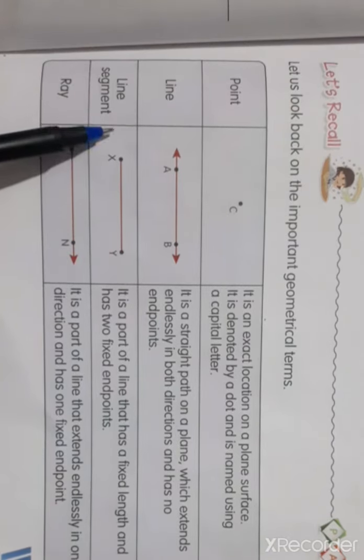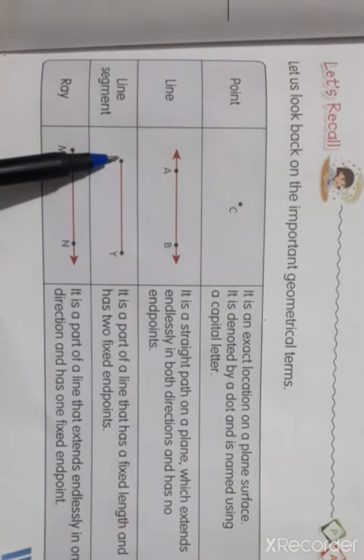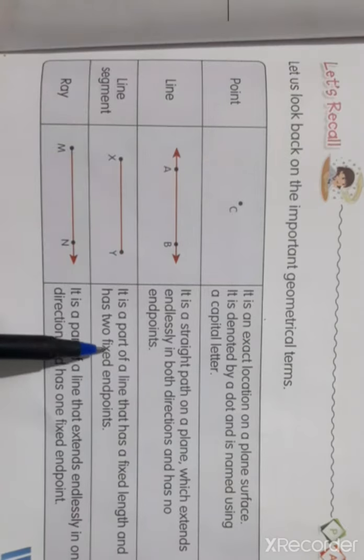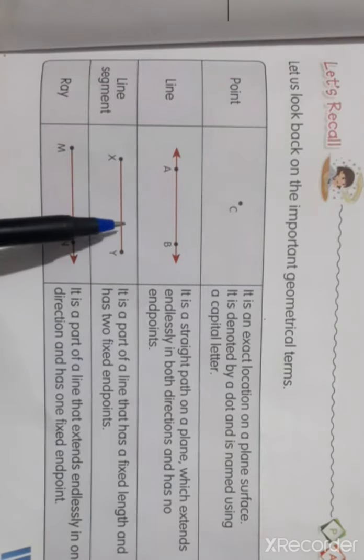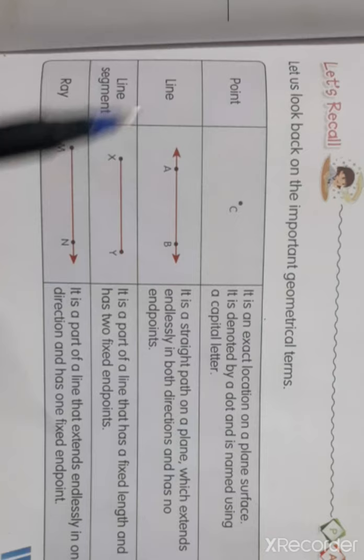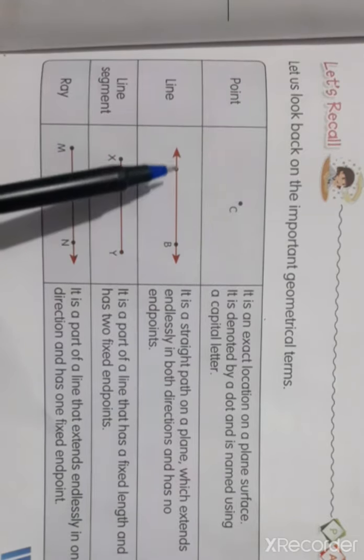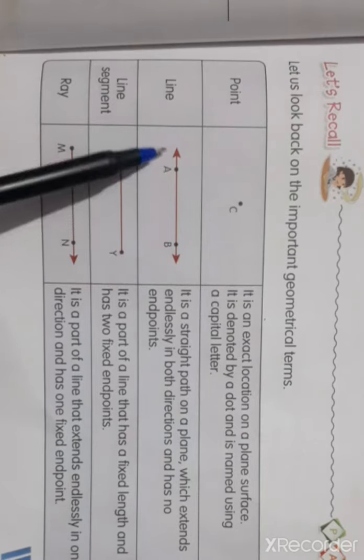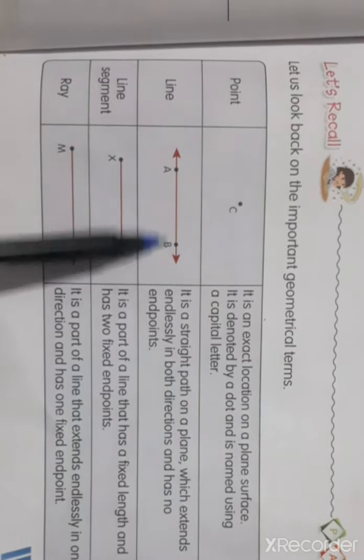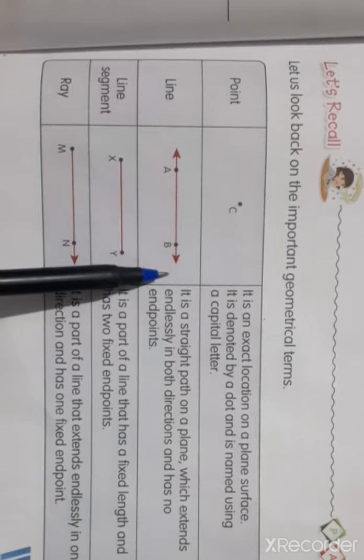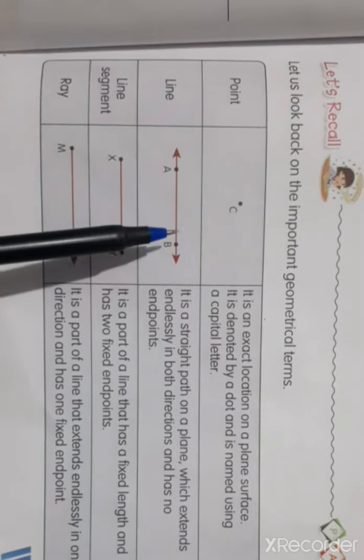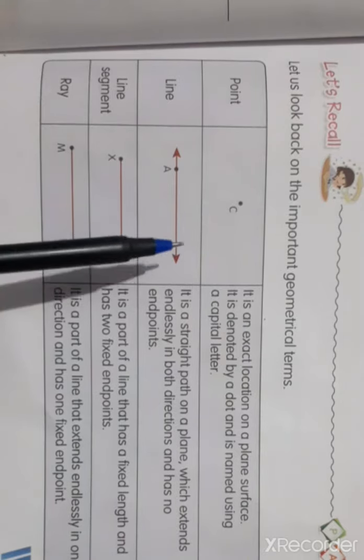Third is the line segment. Here it is a part of line. Line segment is a part of the line but the line has no ending point, so what do we do? In both sides we put the arrow because in line there is no end point.